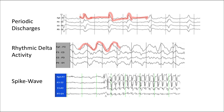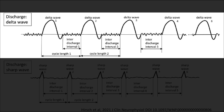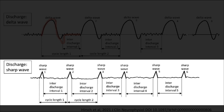Spike wave, such as this example of 3 Hz generalized spike wave in absence epilepsy, has a spike followed by a wave. Here is an illustration from the terminology document showing two different types of periodic discharges. At the top you see periodic discharges consisting of delta waves followed by an inter-discharge interval. At the bottom you see sharp waves again followed by an inter-discharge interval. Both of these would qualify as periodic discharges.